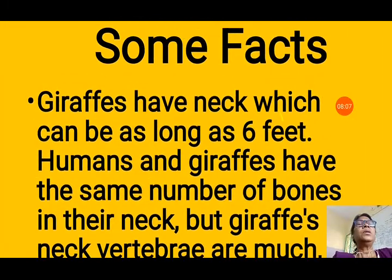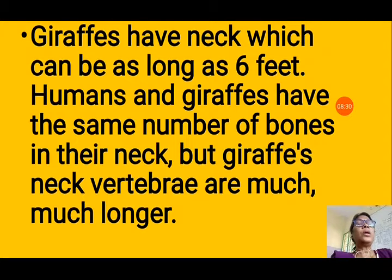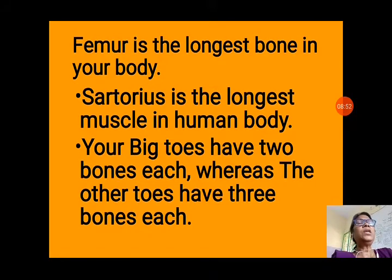Now some interesting facts. A giraffe's neck can be as long as six feet, but humans and giraffes have the same number of neck bones — the giraffe's vertebrae are just much longer, which is why their neck is longer. The femur is the longest bone in your body, and the sartorius is the longest muscle. Your big toes have two bones each, whereas the other toes have three bones each. Similarly, all your fingers have three bones, but your thumb has only two bones, just like your big toe.